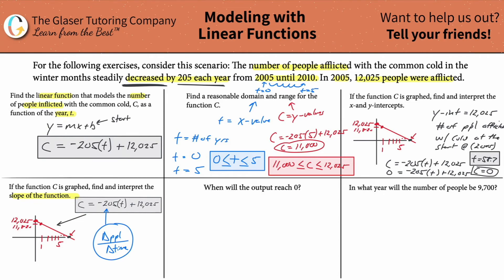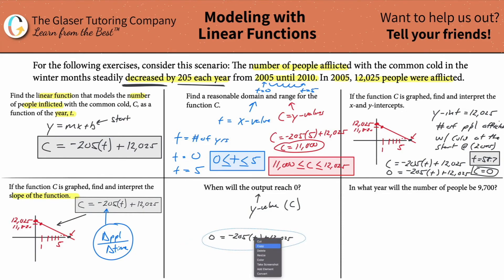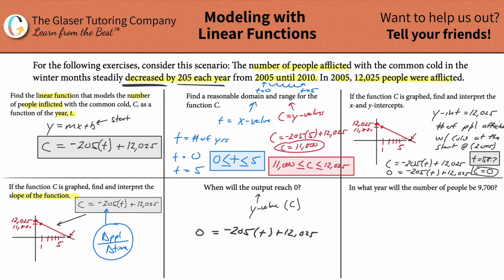When will the output reach zero? The output is always the y value, and in this problem the y value is C. We already calculated that when we found the x-intercept. The question can be phrased in a whole bunch of ways, but we solve it the same way — that's why you need to do a lot of practice. The output reaches zero when the time is approximately 58.7 years, at which point zero people are afflicted.